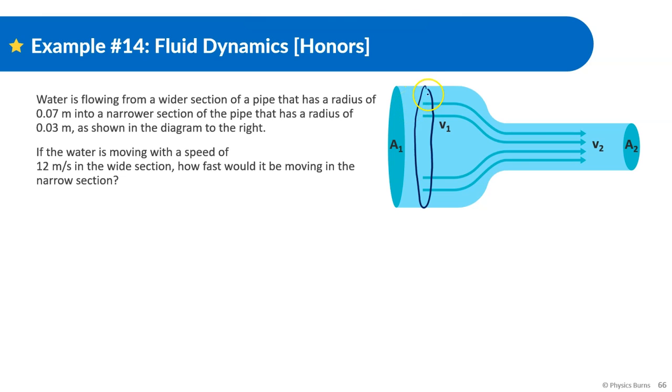The wider section is, I'm going to call this R1 is equal to 0.07. And then they give us the radius of this circle. I'm going to call this R2, which is going to be equal to 0.03. In the wide section it's moving at 12 meters per second, and we want to know what this is.